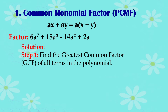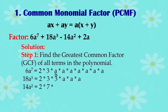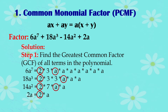Step 1: Find the Greatest Common Factor (GCF) of all terms in the polynomial. Let's find the factors one by one — 6a to the 7th, 18a cubed, 14a squared, and 2a. Circle the common factors among them. Their GCF is 2a.